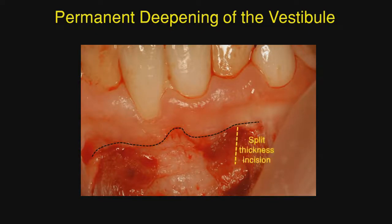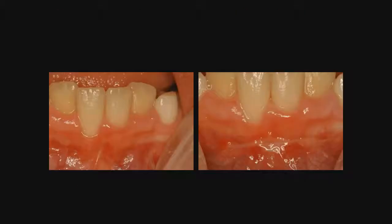A split-thickness incision was made down about 5 millimeters and then bone was exposed in the area. You would think that this would be very painful, but don't mention to the patient that bone is exposed — in about two weeks it will heal over nicely. The frenum is gone, there is no pull, the tooth is going to be moved lingually, that will self-correct, and no graft would be necessary.